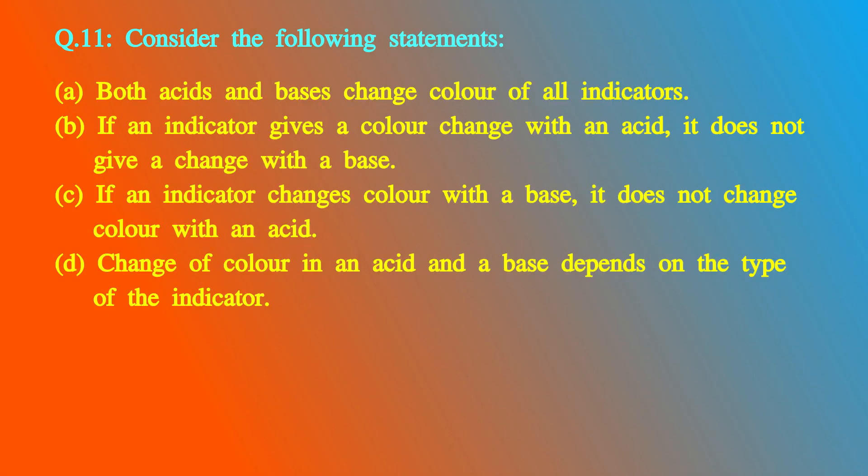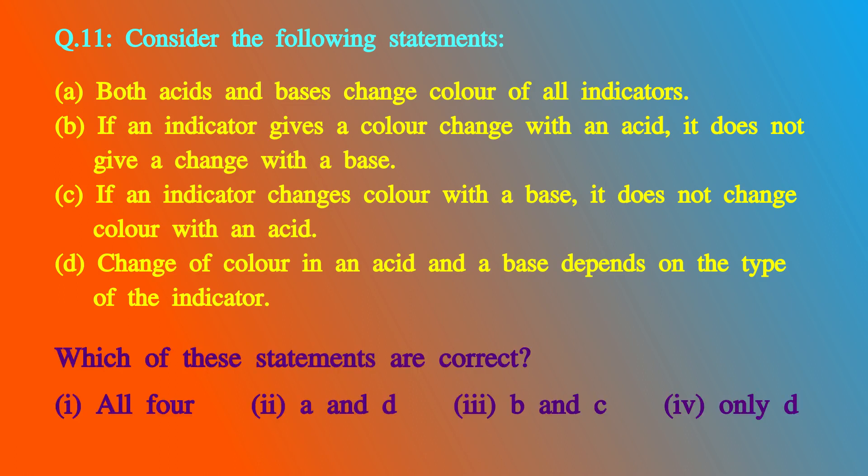Question 11: Consider the following statements. A. Both acids and bases change the color of all indicators. B. If an indicator gives a color change with an acid, it doesn't give a change with a base. C. If an indicator changes color with a base, it doesn't change color with an acid. D. Change of color in an acid and a base depends on the type of the indicator. Which statements are correct? 1. All 4, 2. A and D, 3. B and C, or 4. Only D. The answer is 4 — Only D.